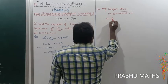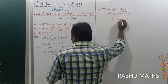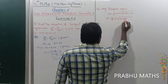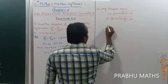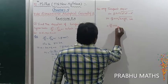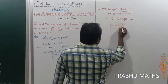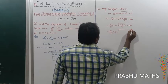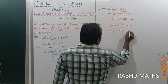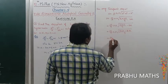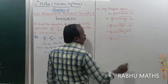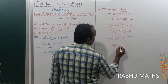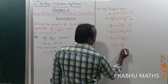So y = (10/3)x ± √(a²m²  - b²), where a² = 16, m² = 100/9, so a²m² = 1600/9. Then 1600/9 minus 64 = 1600/9 minus 576/9 = 1024/9. So √(1024/9) = 32/3.